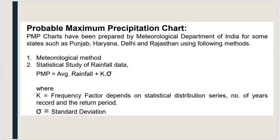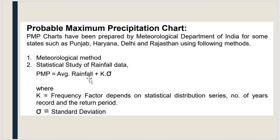The next method is the Probable Maximum Precipitation (PMP) chart, already studied in the first module. These charts are prepared by the Meteorological Department of India. There are two sub-methods: the meteorological method, where discharge is directly found from a graph, and the statistical study of rainfall data using the formula: Average rainfall + K × σ, where K is the frequency factor and σ is the standard deviation.